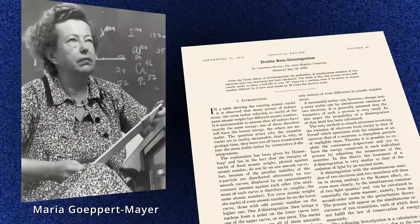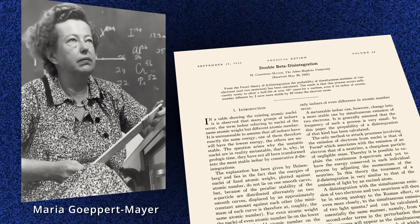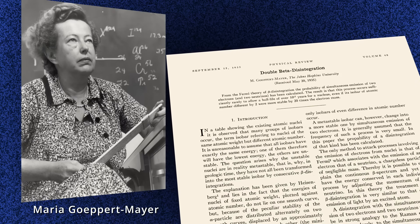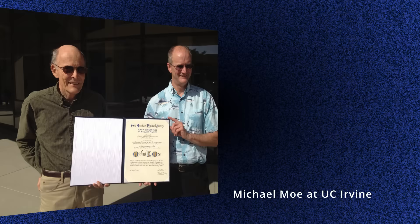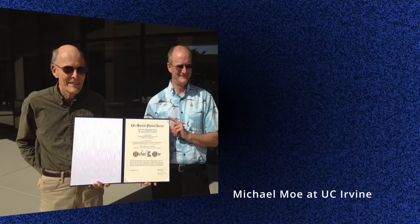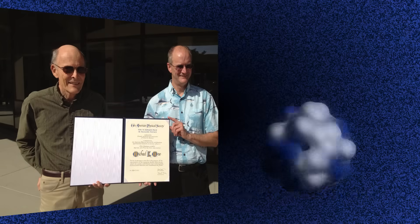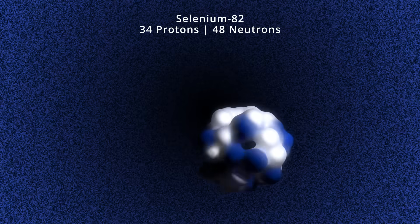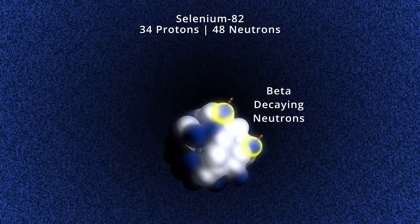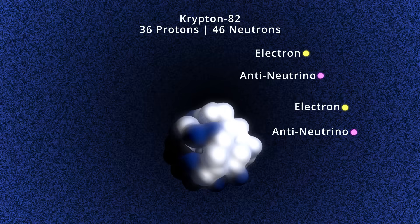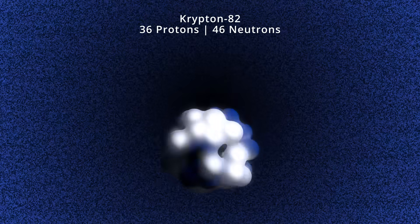Double beta decay was first calculated by Maria Geppert Mayer in 1935. It was first observed in a laboratory in 1987 by the group of Michael Moe at UC Irvine, in a sample of selenium-82, where two neutrons turned into two protons, which transformed the atom into krypton-82.